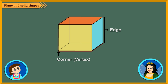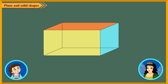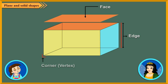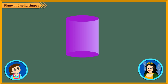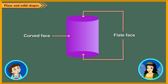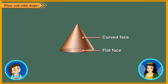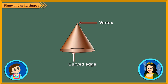This is a cuboid. It looks like a pencil box or a brick. It also has six faces, twelve edges, and eight vertices. Now take a look at this shape. It is like a can or drum. It is called a cylinder. It has three faces — two flat and one curved. It has two curved edges and no vertex at all. This is a cone. It has two faces — one flat and one curved — and also has one vertex and one edge.